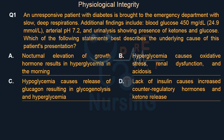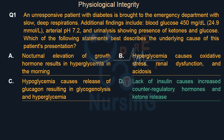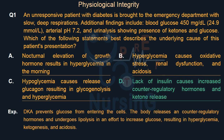The right answer is Option D: Lack of insulin causes increased counter-regulatory hormones and ketone release. In DKA, insulin deficiency prevents glucose from entering the cells. The body releases counter-regulatory hormones and undergoes lipolysis in an effort to increase glucose, resulting in hyperglycemia, ketogenesis, and acidosis.